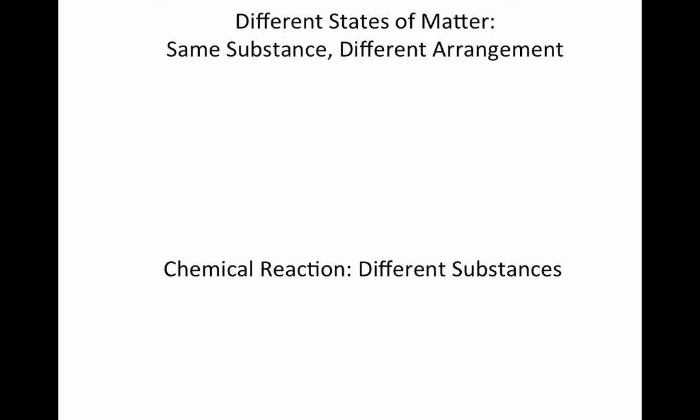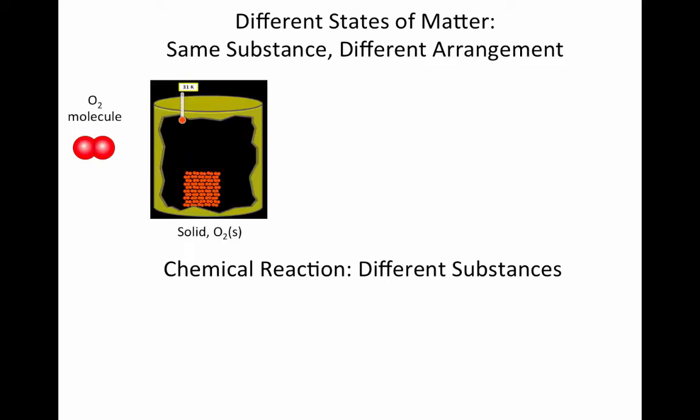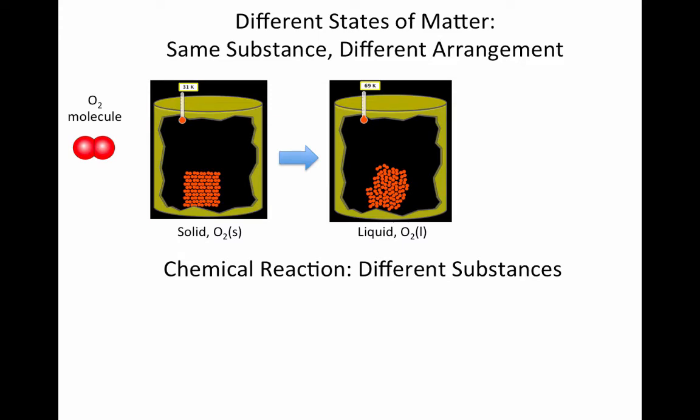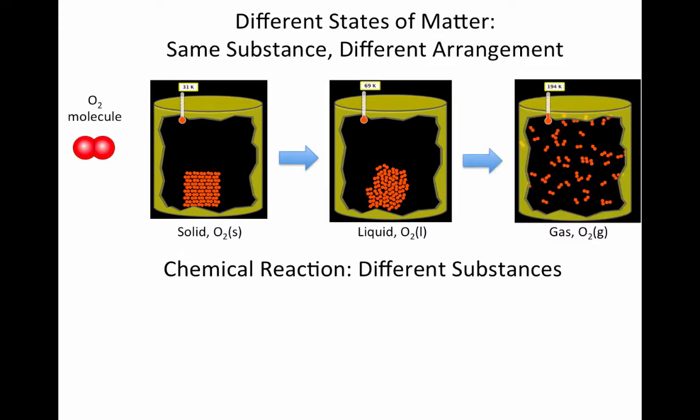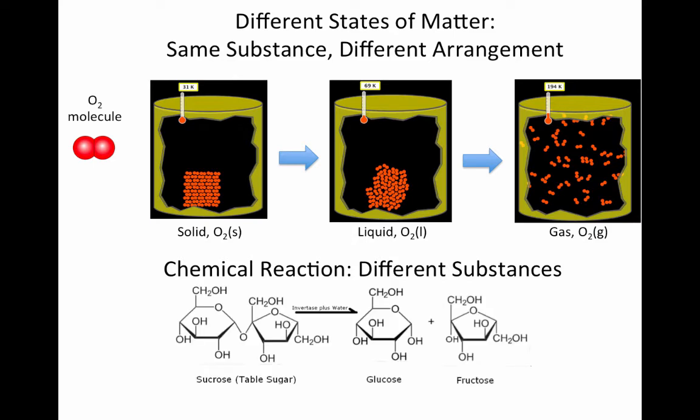We can also consider substances in different states of matter. When we have a phase change, we see the same substance, but a different arrangement of the particles. You can have an O2 molecule that is combined to form a solid, loosely arranged as a liquid, or the molecules all spread out as O2 gas. This is different from a chemical reaction. A chemical reaction involves different substances. You can start with sucrose and have it undergo a chemical reaction to form the sugars glucose and fructose.